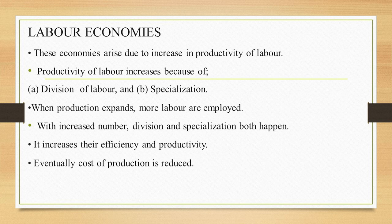When production expands, more labor is employed. With increased numbers, division and specialization happen — if you have fewer workers, one person performs all activities and neither division nor specialization takes place. So it is very important to increase the output. When output increases, these labor economies start taking place. Eventually, labor's efficiency and productivity both increase, which in turn means cost of production is being reduced.